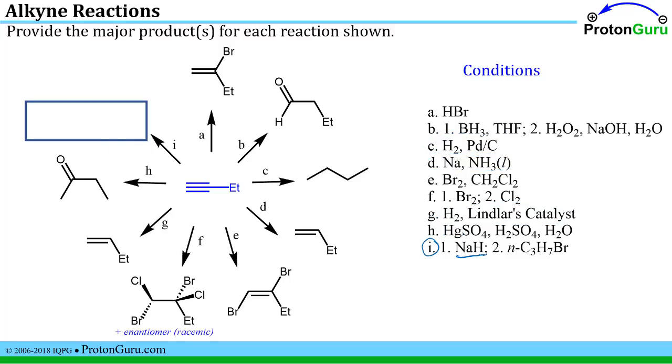Finally we have reaction I. Now this first step, sodium hydride, is a very strong base. And it simply takes off this hydrogen from the terminal alkyne and makes an acetylide anion. The second step has bromopropane.